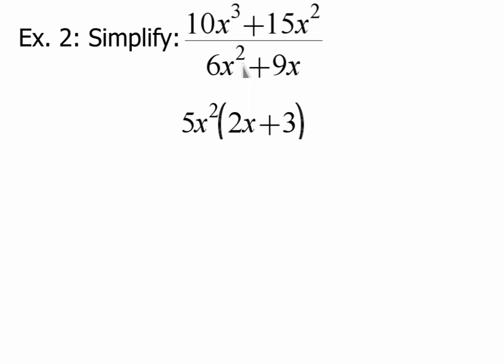For the denominator, 6x squared and 9x. 6 and 9 share a 3. And x squared and x share x. So I can factor out a 3x. All right, and when I do that, 6 divided by 3 is 2, and x squared divided by x is x. 9 divided by 3 is 3. And our x divided by x is 1, so they cancel out. So here's our factored version.